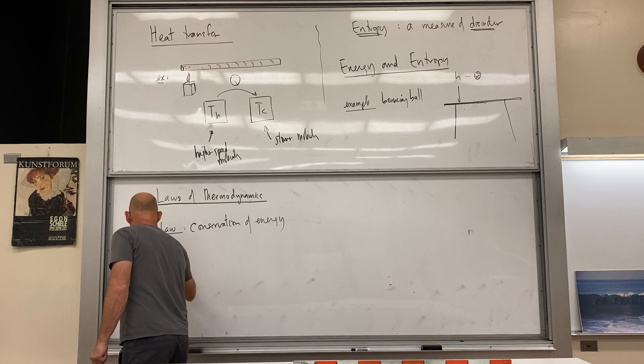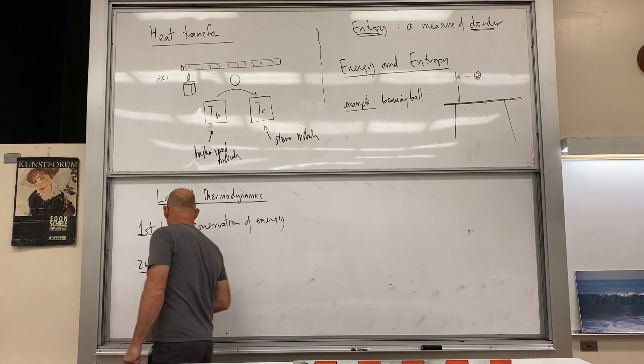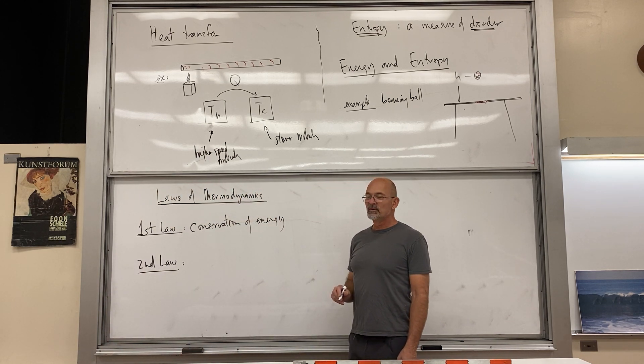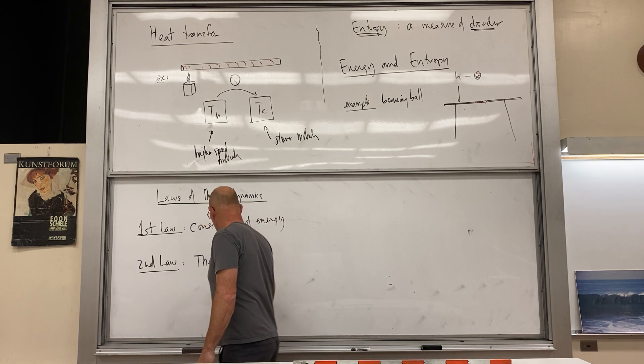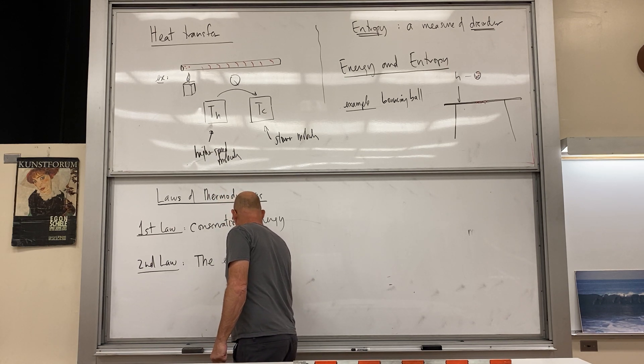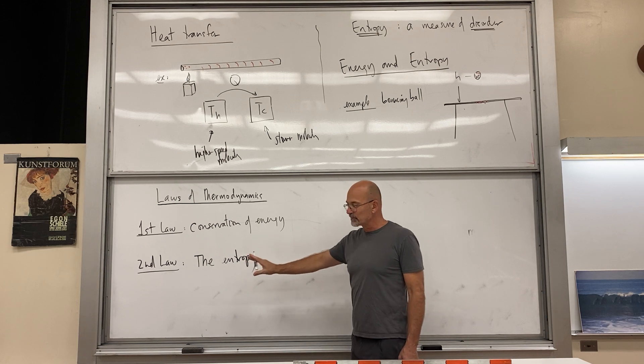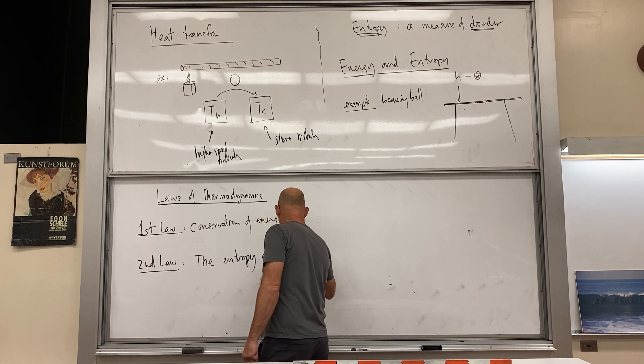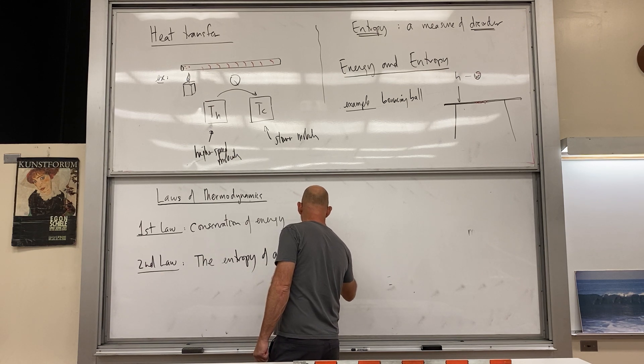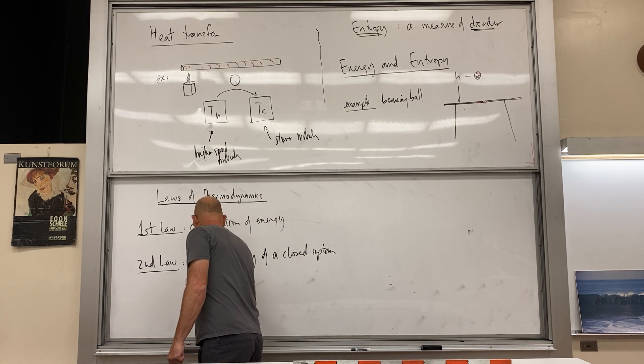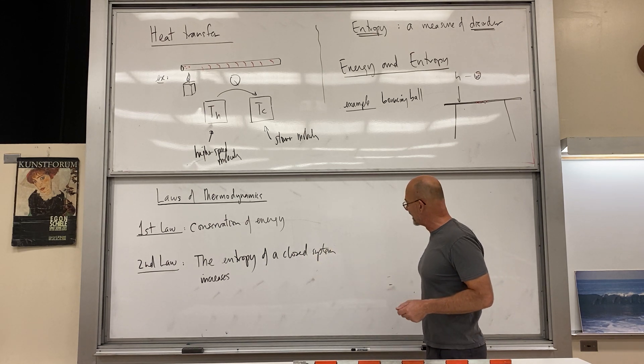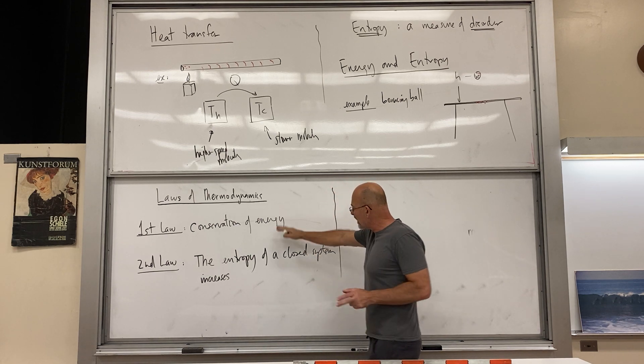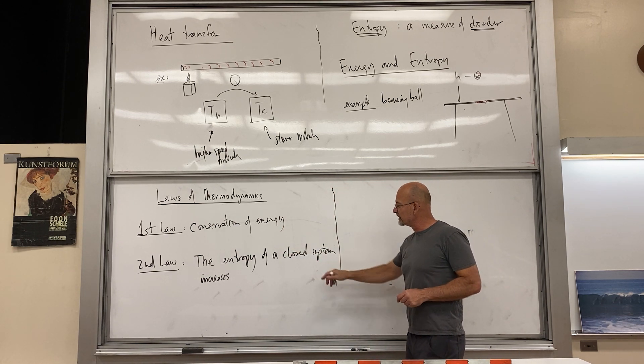The second law is that the entropy of a closed system increases. Now this is going to need some more explanation. The entropy of a closed system increases. So if it increases as opposed to decreasing, we need some quantitative formulas to describe it now. I've just been describing it in terms of order and disorder. But we can hold on to these two statements.